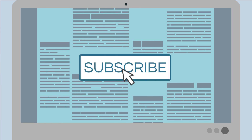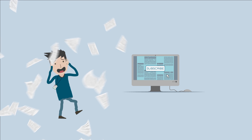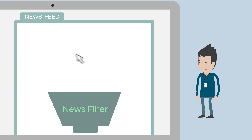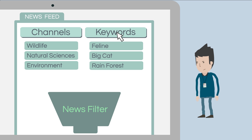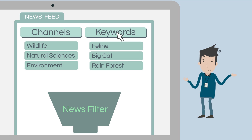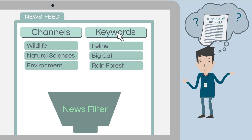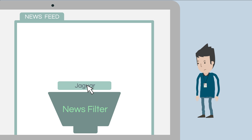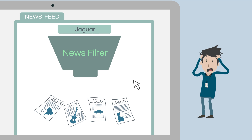To stay up to date, Michael subscribes to a news feed that sends him hundreds of articles every day. But no matter how carefully he selects news channels of interest and how precisely he defines the keywords in his news filter, he still misses relevant articles from other domains. And when he chooses a generic keyword like jaguar, he also gets articles on luxury cars and electric guitars.